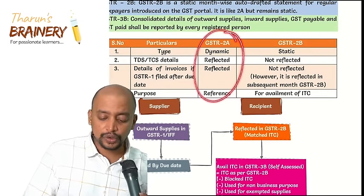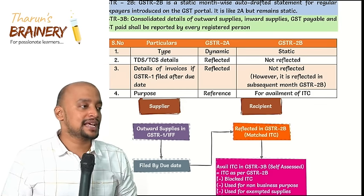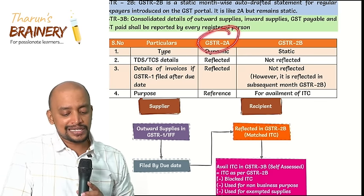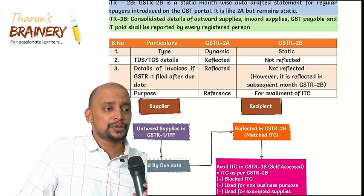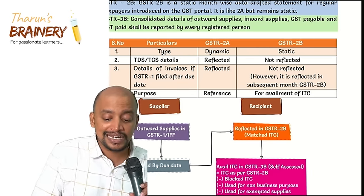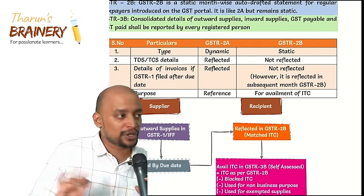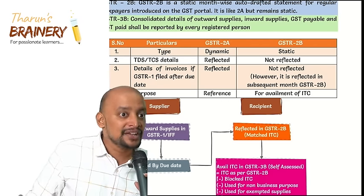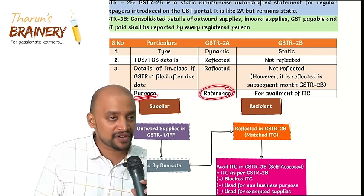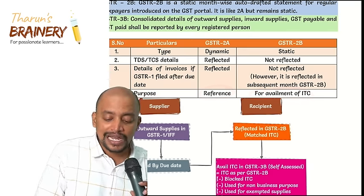There are two statements where details of inward supplies are available: GSTR-2A and GSTR-2B. The moment a supplier files GSTR-1, data is reflected in both GSTR-2A and GSTR-2B. However, the document relevant for availment of ITC is only GSTR-2B. GSTR-2A is for reference purpose only. GSTR-2B is the basis for availing ITC.